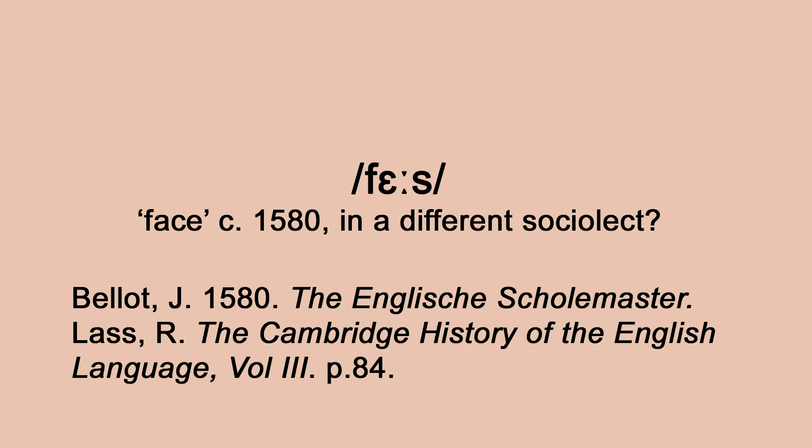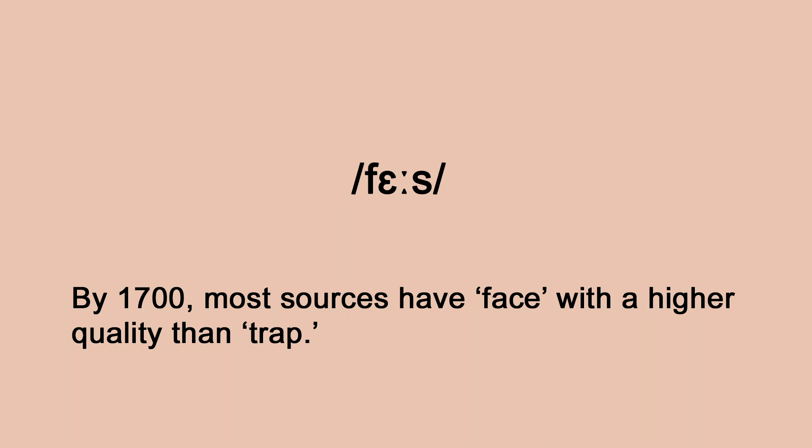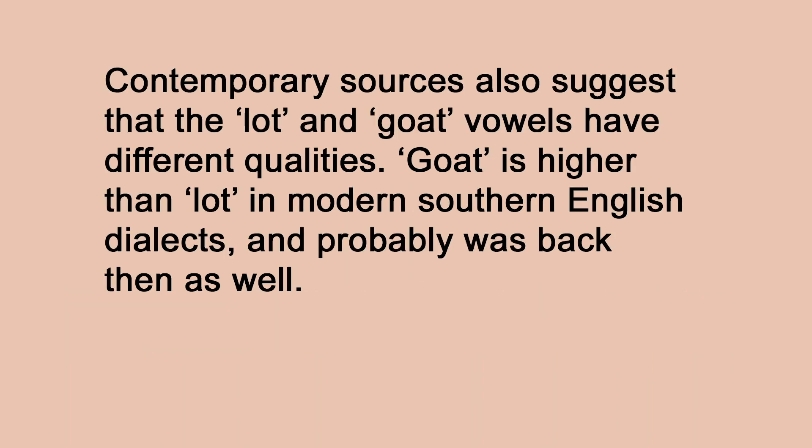This tells us that the face vowel was probably higher in the mouth than the trap vowel by that point. Last suggests there were perhaps two versions of standard southern English at the time: a more conservative version with 'trap'-like face, and a raised version. By before 1700, most grammarians were treating these as separate vowel qualities connected only by spelling, suggesting the face vowel had raised. For the goat vowel, people like Robert Robinson suggest that in the early 1600s it had a higher quality than the short 'lot' vowel.